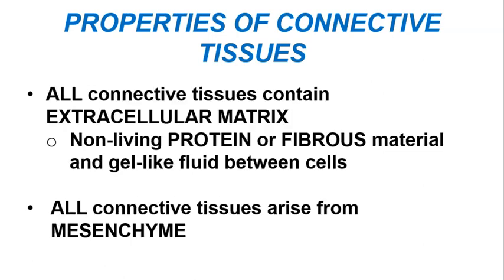The connective tissues are incredibly diverse in both their structure and their function. Much of that diversity is due to the composition of the extracellular matrix, which is a protein or fibrous material along with a gel-like fluid that exists between the cells of the connective tissue. The extracellular matrix can be soft and flexible, or it can be hard and rigid. Mesenchyme is an embryonic connective tissue that gives rise to all of the connective tissues in the human body, meaning they all have a common embryonic origin.